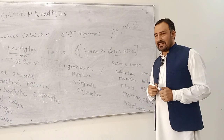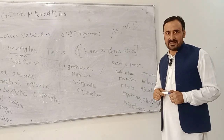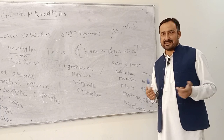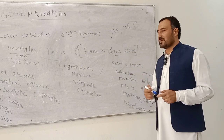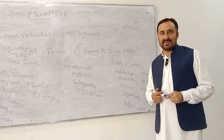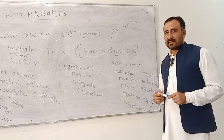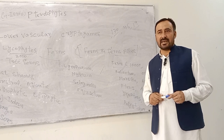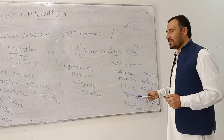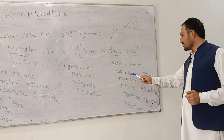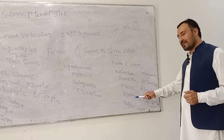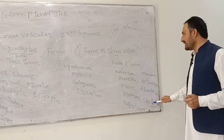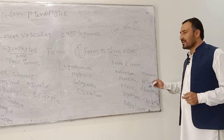Some common fern families are Aspleniaceae, Pteridaceae, Thelypteridaceae, Dryopteridaceae, Osmundaceae, Blechnaceae, etc. The lycophyte families are Lycopodiaceae, Selaginellaceae, and Equisetaceae. Examples of lycophytes include Selaginella, Lycopodium, Huperzia, and Equisetum. While remaining examples are ferns: Adiantum, Marsilea, Pteris, Dryopteris, Polystichum, Osmunda, Actinopteris, Aleuritopteris, Cheilanthes, etc.